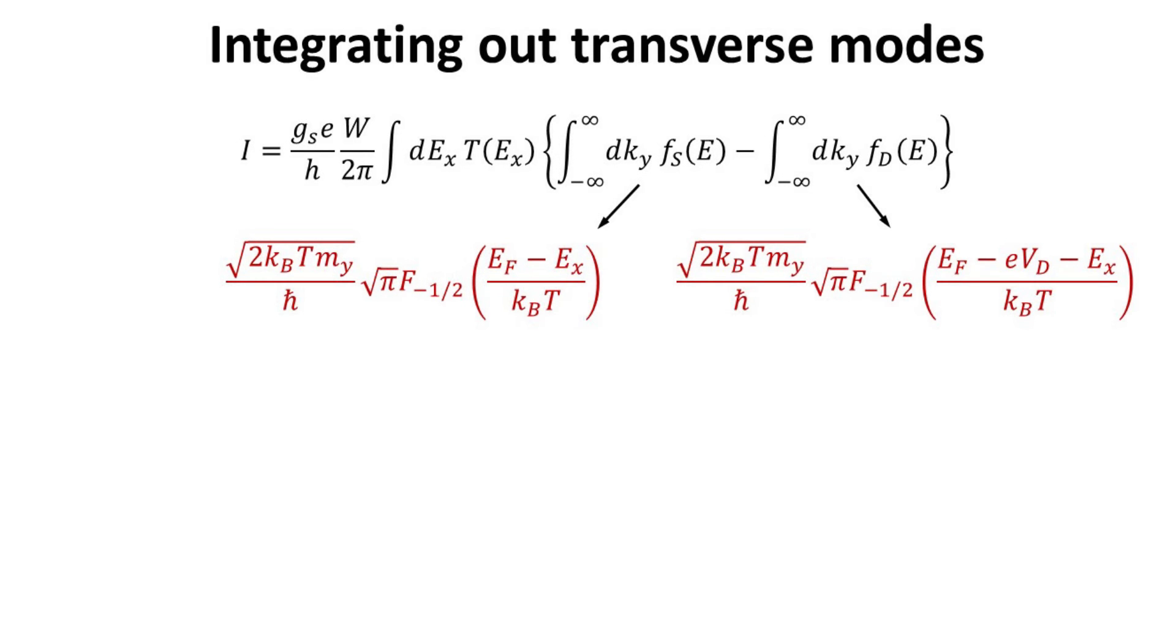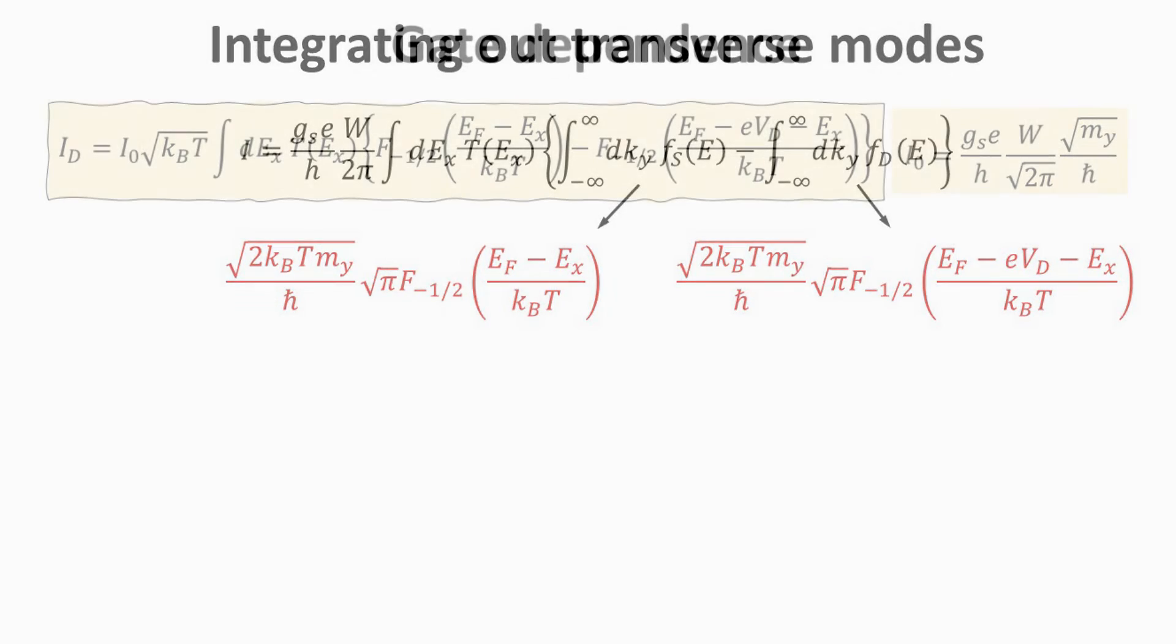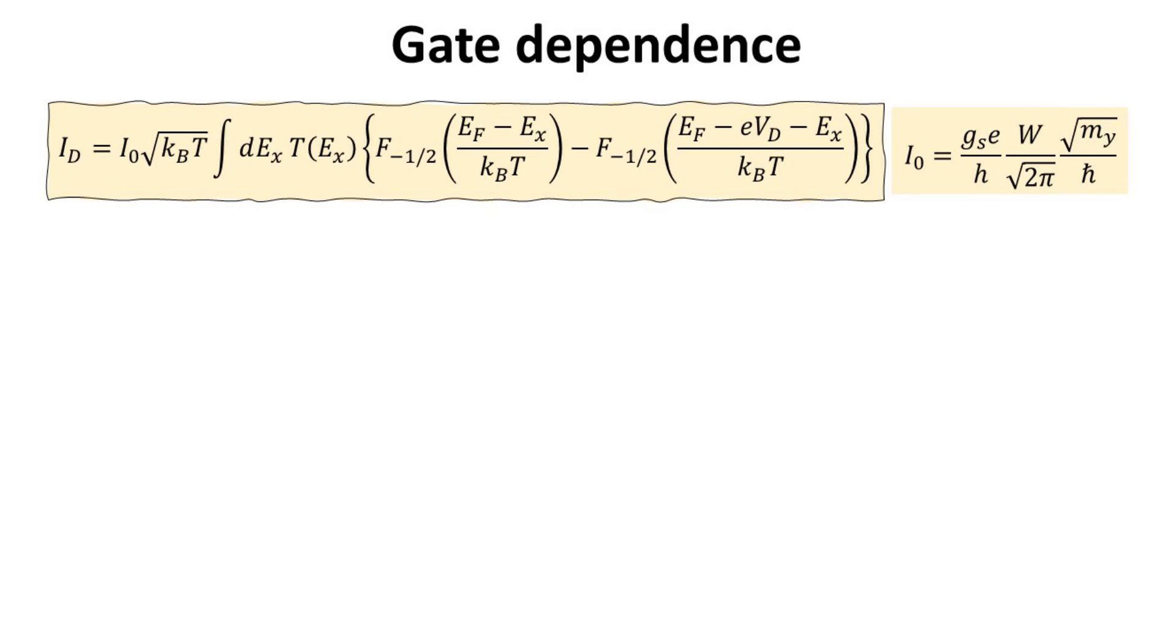Going through similar math, we can also replace the integral over the drain Fermi function with its Fermi-Dirac integral of minus one-half. With this, we arrived at the final expression for the drain current in terms of the Fermi-Dirac integrals of minus one-half. This expression is solvable if we know what is the transmission function t.